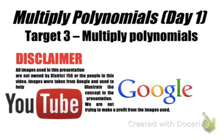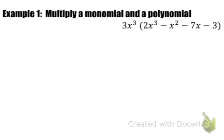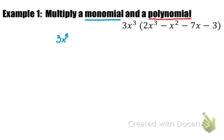In this video, you're going to learn how to multiply polynomials. In example 1, we have to multiply a monomial — which is, remember, one term — and then a polynomial. So we have 1, 2, 3, 4 different terms. I'm going to rewrite this product so I have some space to work with, and I'm going to indicate the monomial in blue and then the polynomial in red.